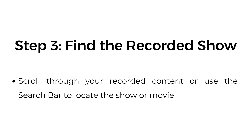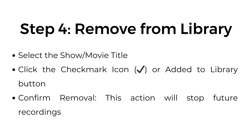Step three, find the recorded show — scroll through your recorded content or use the search bar to locate the show or movie. Step four, remove from library — select the show or movie title, click the checkmark icon or the add to library button, and confirm removal. This action will stop future recordings.